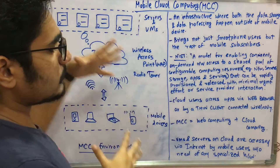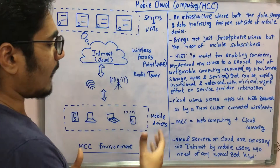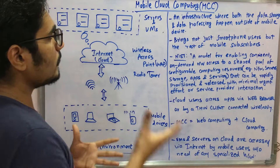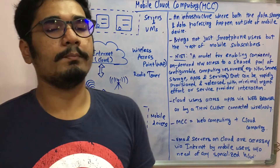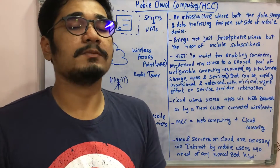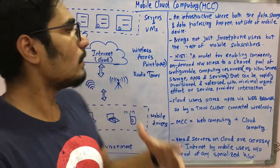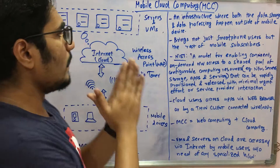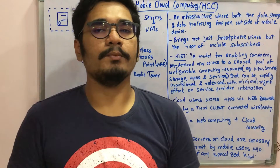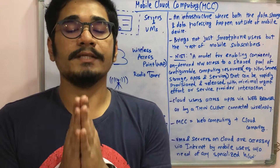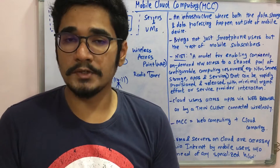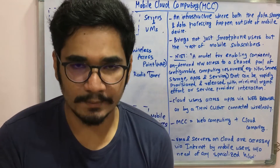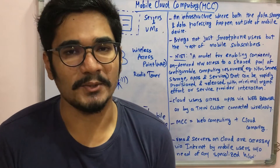In this diagram, you can see VM servers on the cloud are accessed via the internet by mobile users without any need for specialized hardware, equipment, or explicit coding or processing. That's what makes it easy to begin with mobile cloud computing. Hope you enjoyed this video — please like, share, comment, and most importantly, don't forget to subscribe to my channel. Thank you very much for watching.